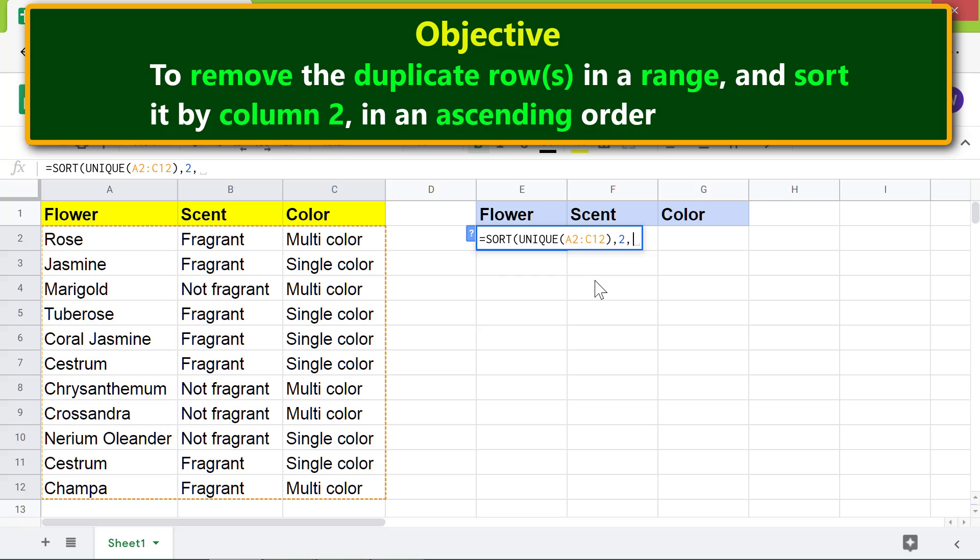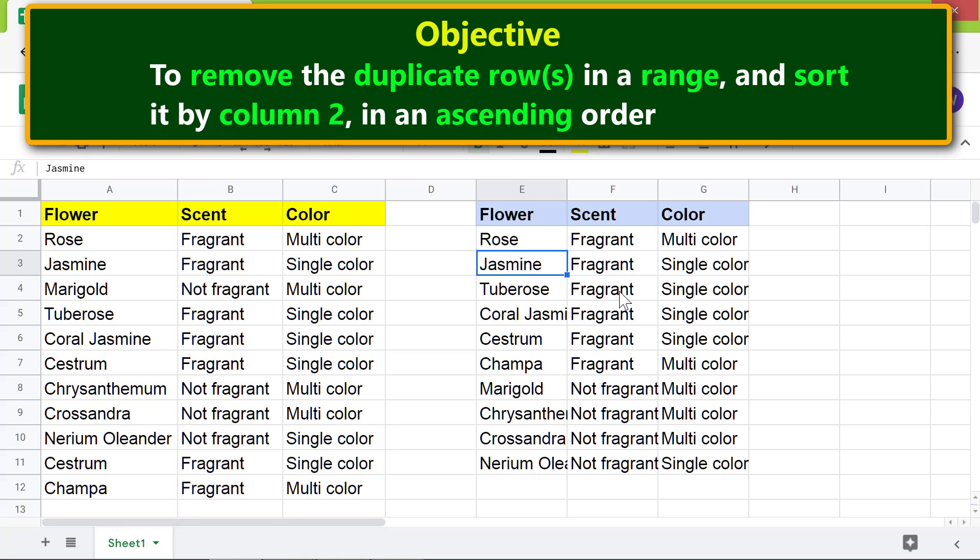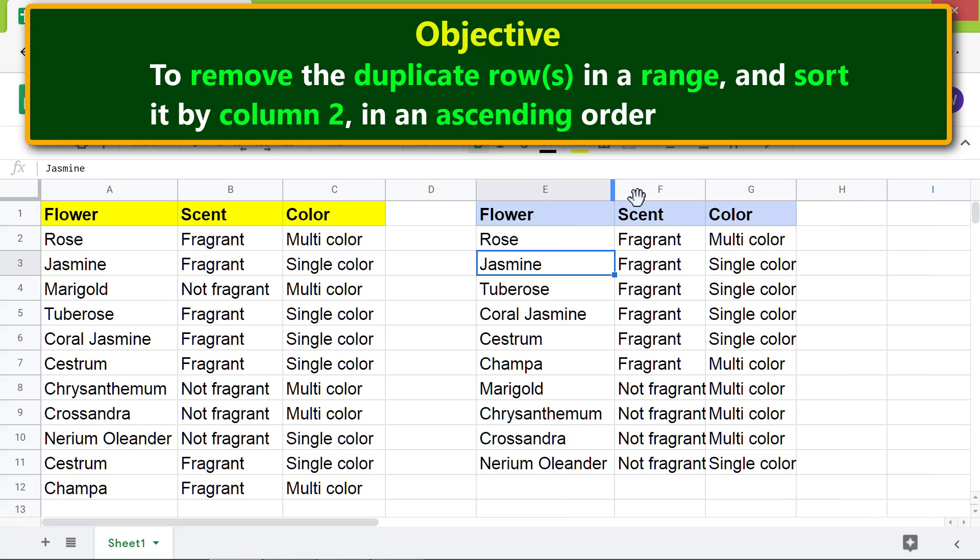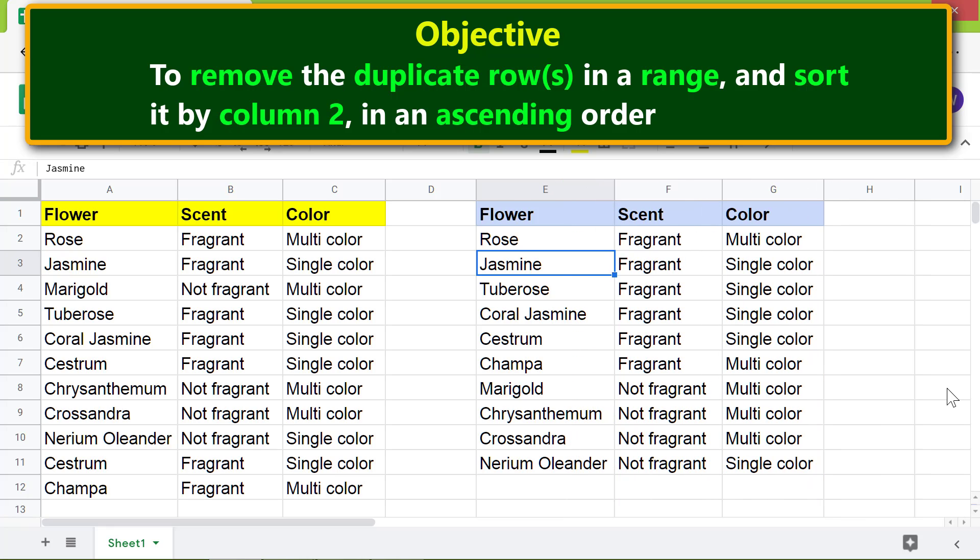Press Enter. There you go! The UNIQUE function has removed this duplicate row from the range. The SORT function has sorted the data in column 2 in ascending order.